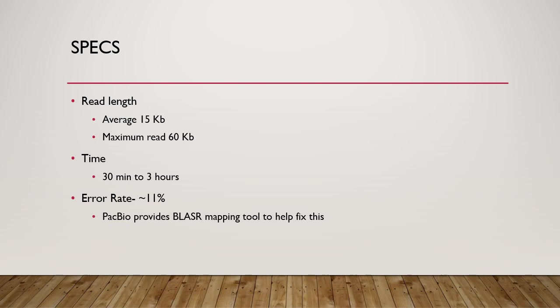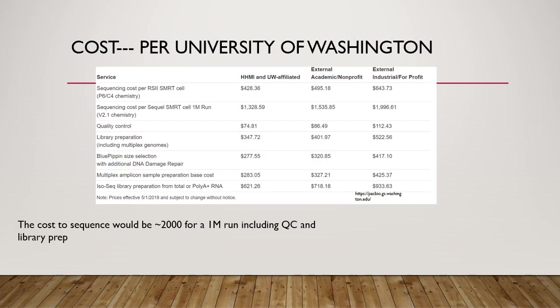The big drawback to SMRT sequencing is its high error rate, which is about 11%, compared to Illumina's error rate of 0.1%. To combat this lofty error rate, PacBio provides a Blazor mapping tool. It works by finding the highest scoring local alignment between the read and genome, which is then refined. Another drawback is the price — the instrument itself costs upwards of $700,000. The table below outlines the cost if you were to send your genome to the University of Washington for sequencing, which would be about $2,000 for a run, including quality control and library prep.